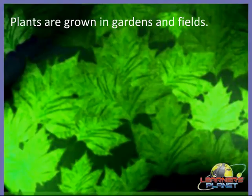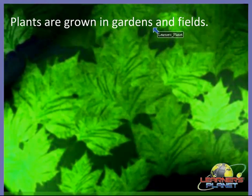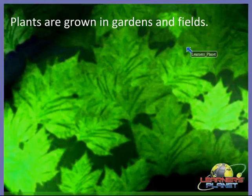Children, you must have seen plants being grown in gardens and fields. Whenever you step out of the home and visit a garden or any field, you see many different types of plants. There are varieties of plants in gardens and fields. So we can say that plants are grown in gardens and fields. But children, have you ever imagined why do people grow them?